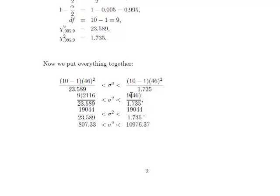We have 19044 in the numerator, over 23.589 in the denominator, less than sigma-squared, less than 19044 over 1.735. And your final answer for part A is 807.33 less than sigma-squared less than 10976.37.